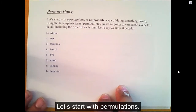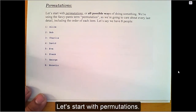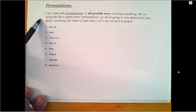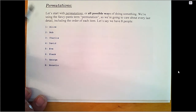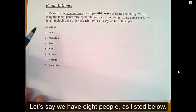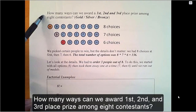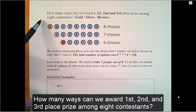Let's start with permutations. Let's say we have eight people as listed below. How many ways can we award first, second, and third place prizes among those eight contestants?